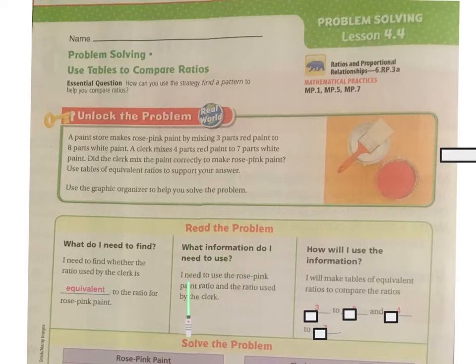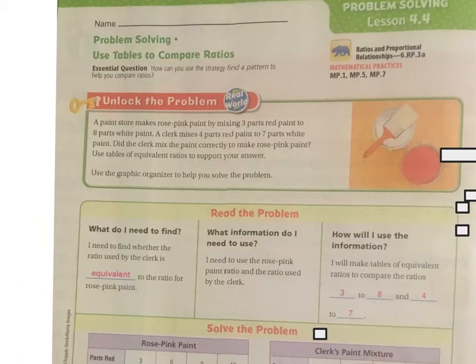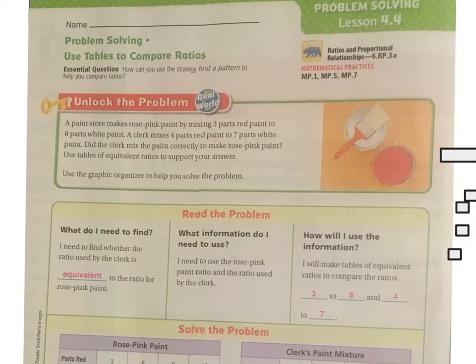What information do I need to use? Well, I need to use the rose pink paint ratio and the ratio used by the clerk. How will I use this information? I'm going to make a table of the equivalent ratios to compare the ratios. So first I'm comparing the three to the eight and the four to the seven. Here's my three parts to the eight and my four parts to the seven.